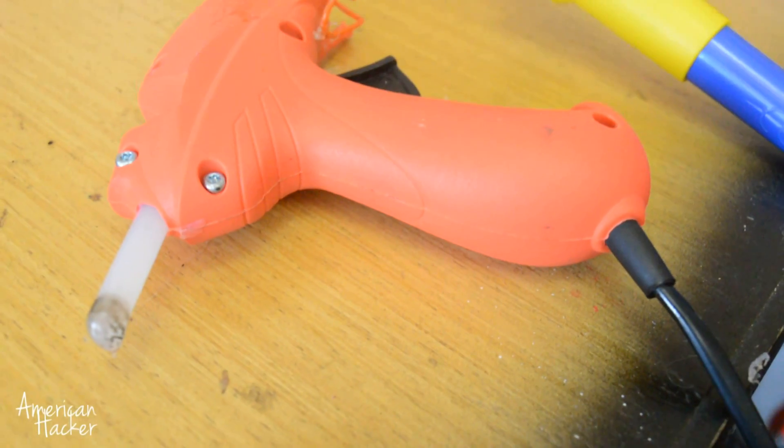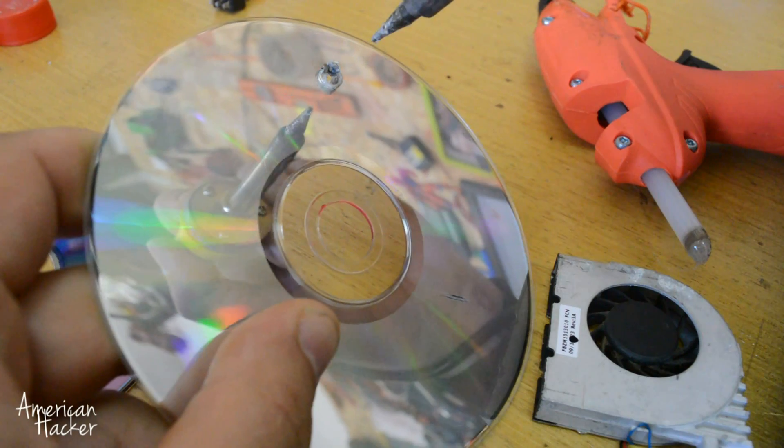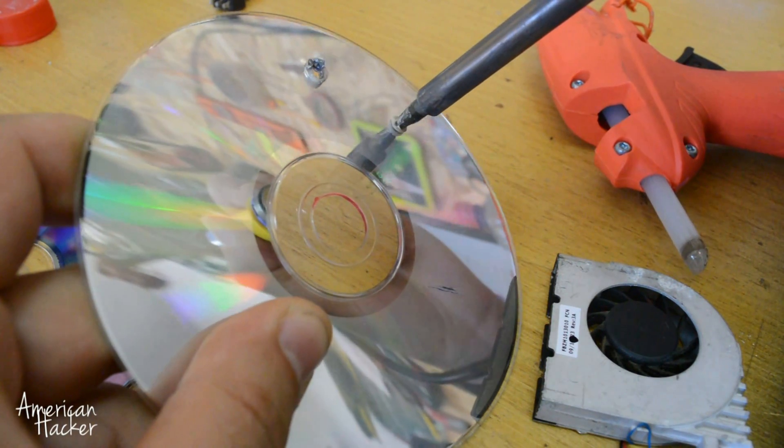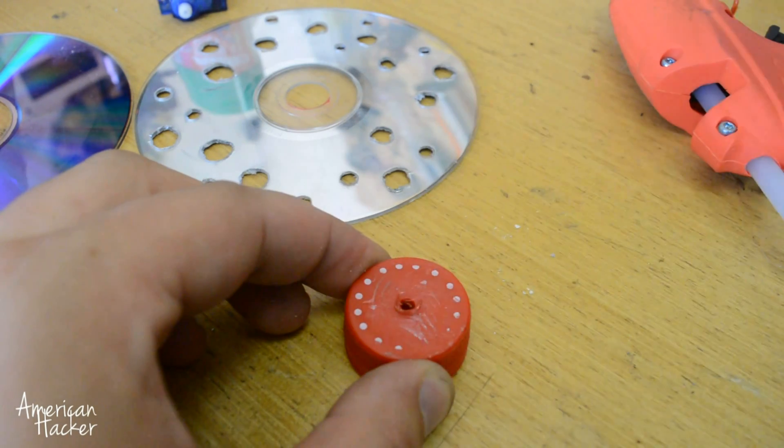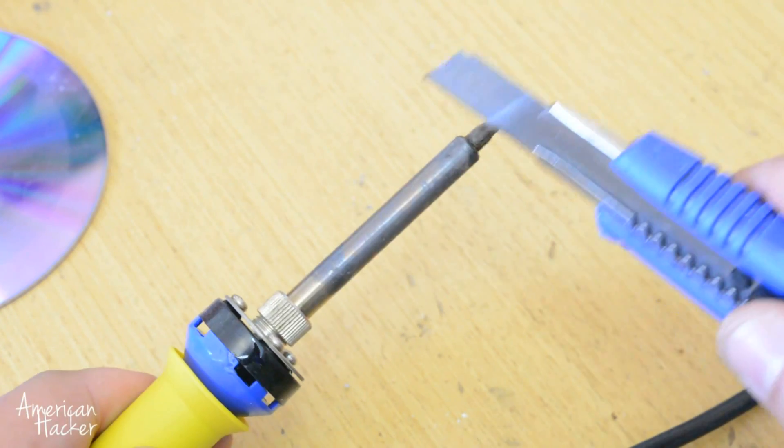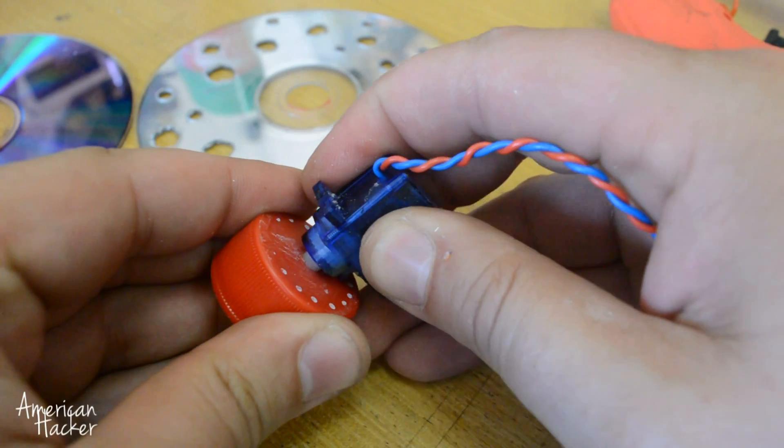Soldering iron and hot glue gun are tools that we need. First with the soldering iron I'm going to make some holes in the CD and one hole in the bottle cap. After doing this you must clean the soldering iron tip from melted plastic.